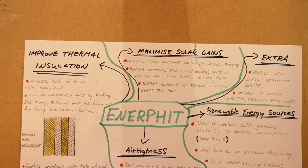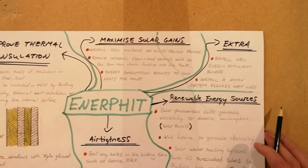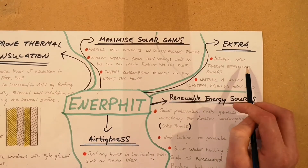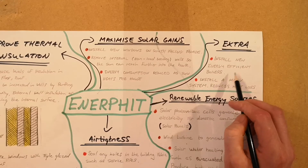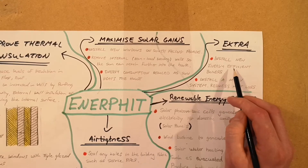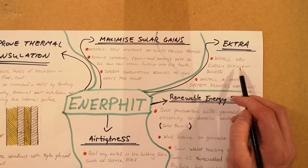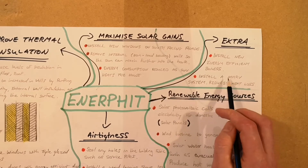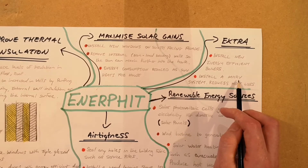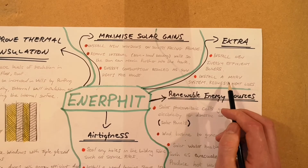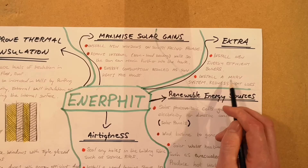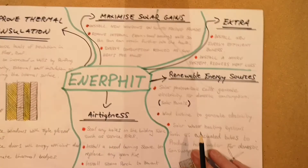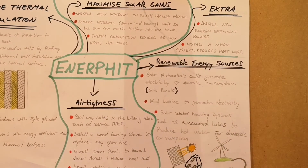As an extra, you can install energy-efficient boilers. In an older building, the boilers already in place are more than likely not energy efficient. As we discussed in the passive house, you can also install a ventilation system, which has a lot of benefits, especially reducing heat loss.